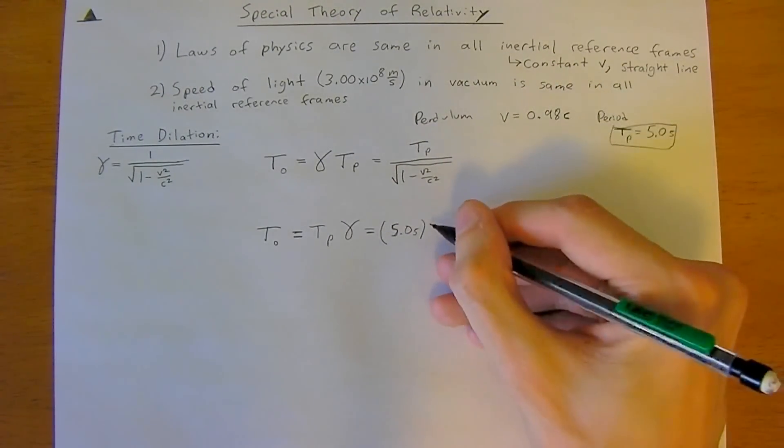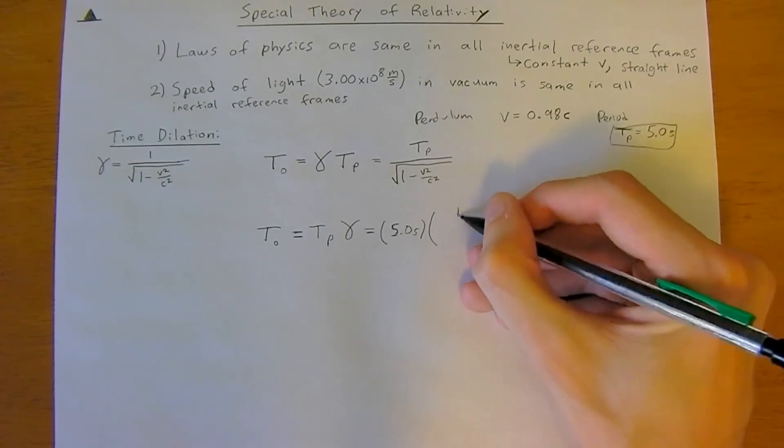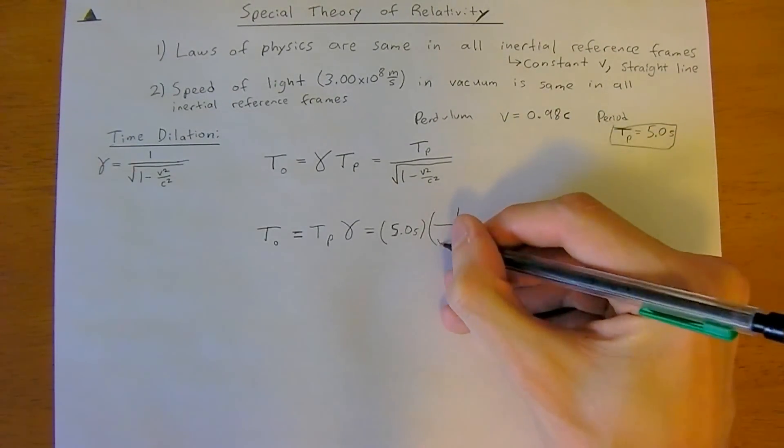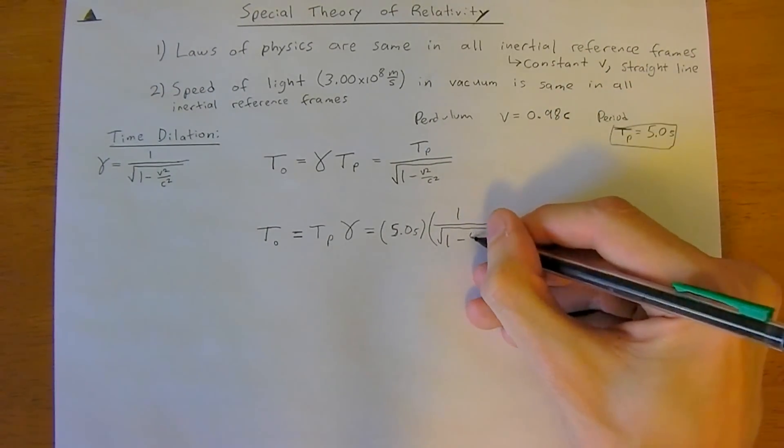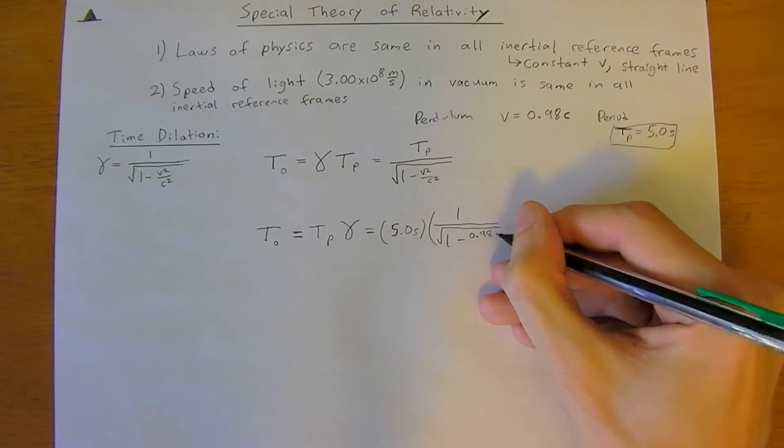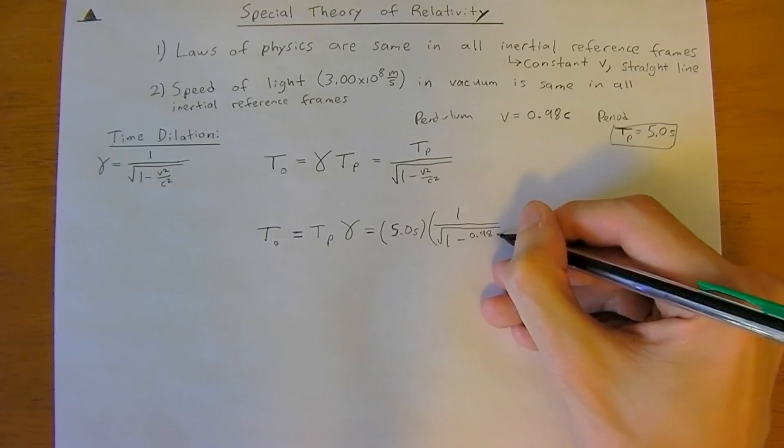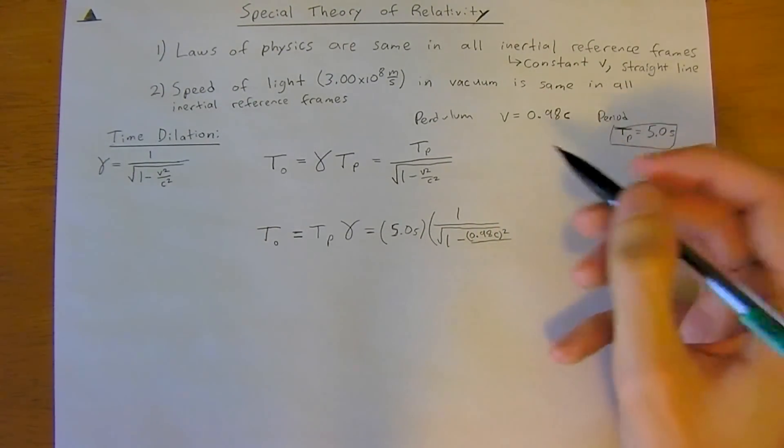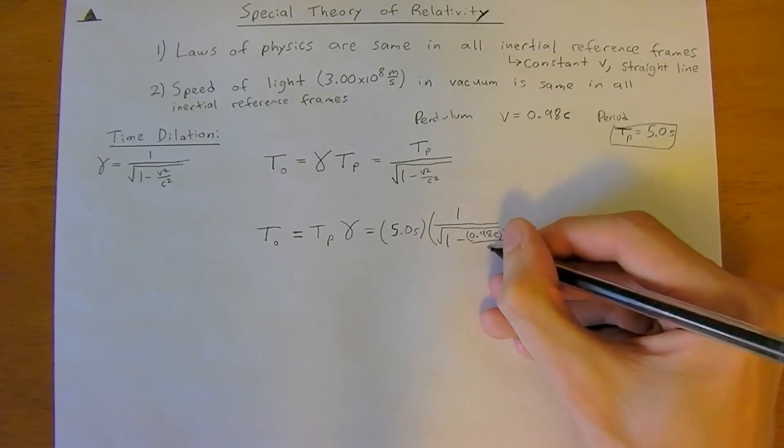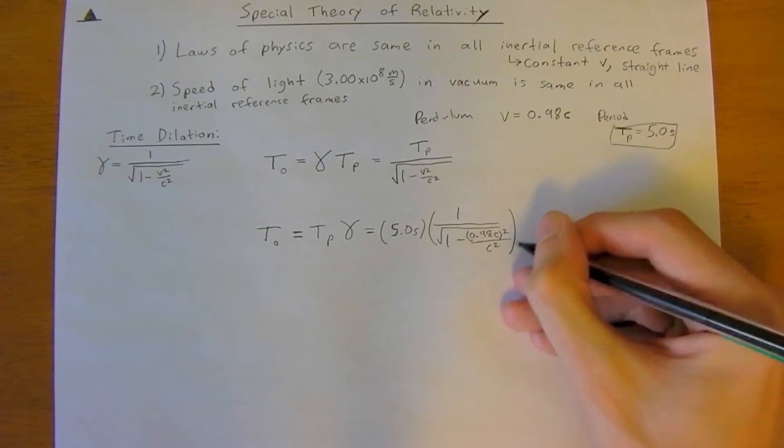And this is just going to be times gamma. So, 1 divided by the square root of 1 minus 0.98 c squared, which is the velocity, divided by c squared.